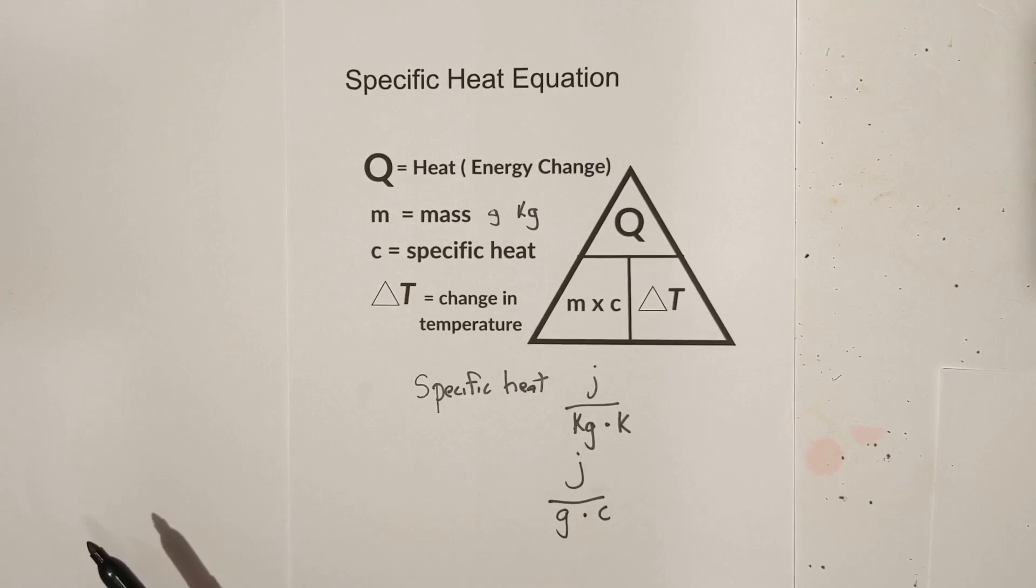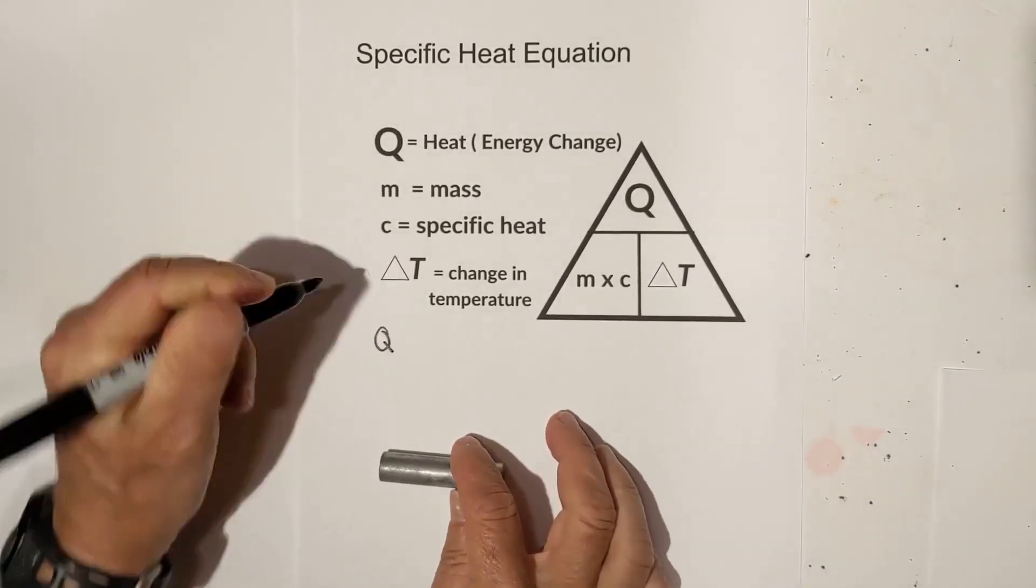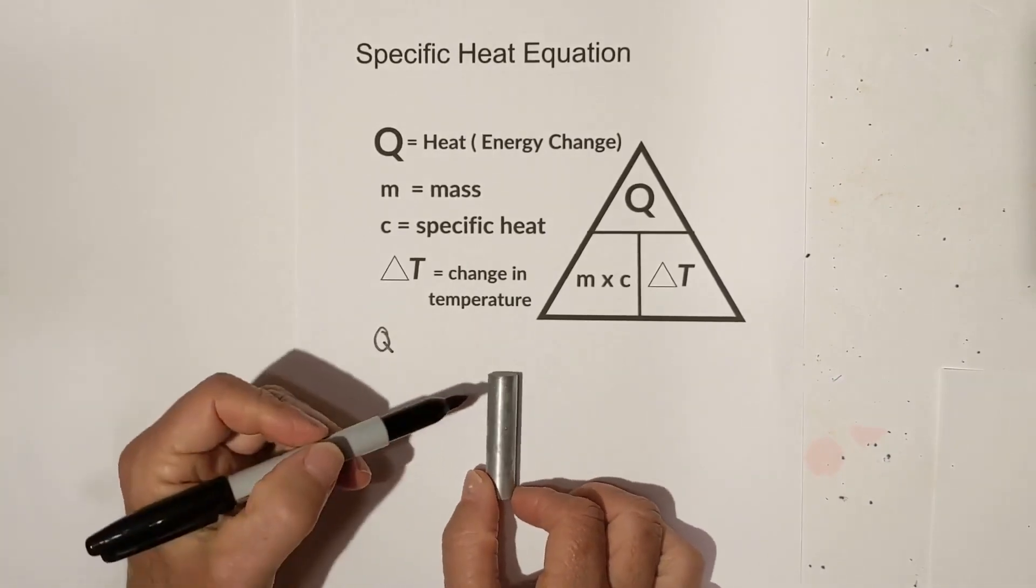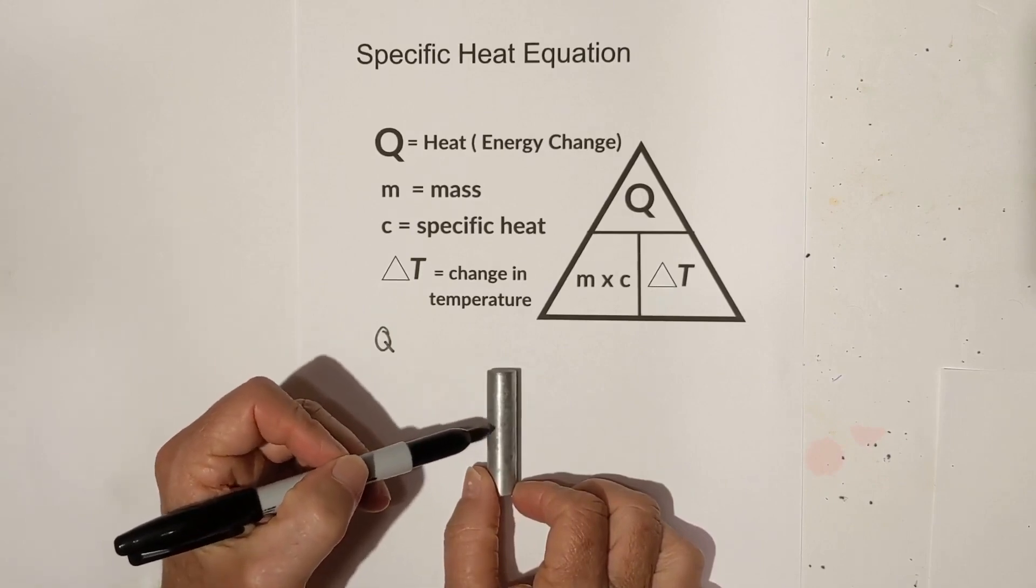Let me go through a couple ways you can use this triangle. First, I can find Q. Remember, Q is how much heat I need to apply to this object to raise it a certain temperature.